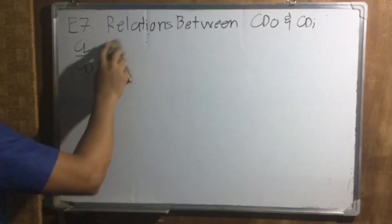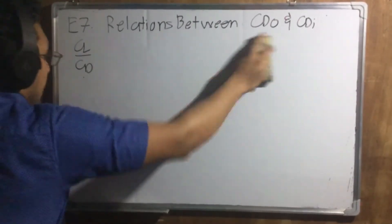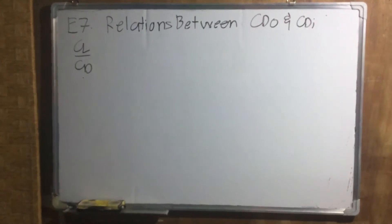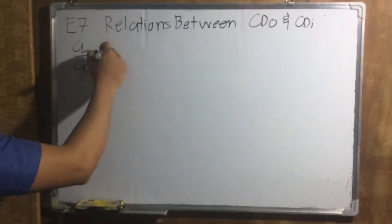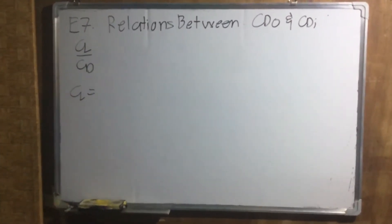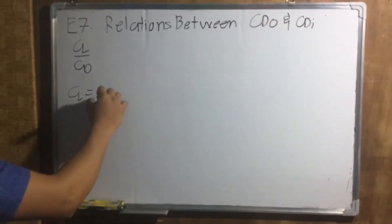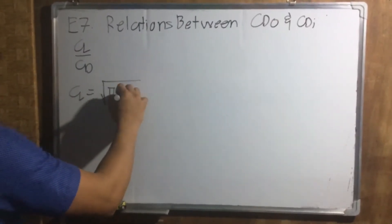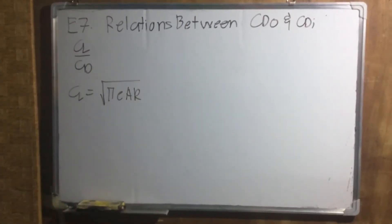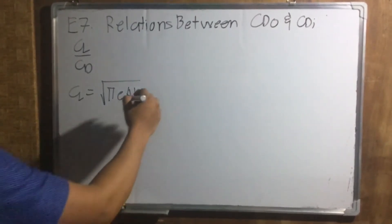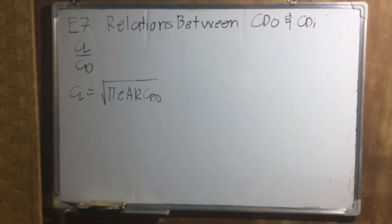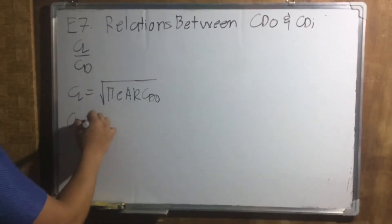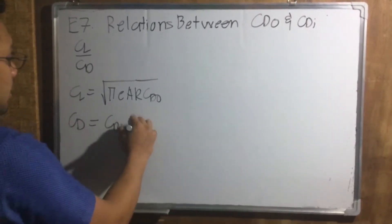We know that CL over CD, we know that CL is equals to square root of pi E AR CDO. That's our CL. And CD, we all know that CD is equals to CDO plus CDI.